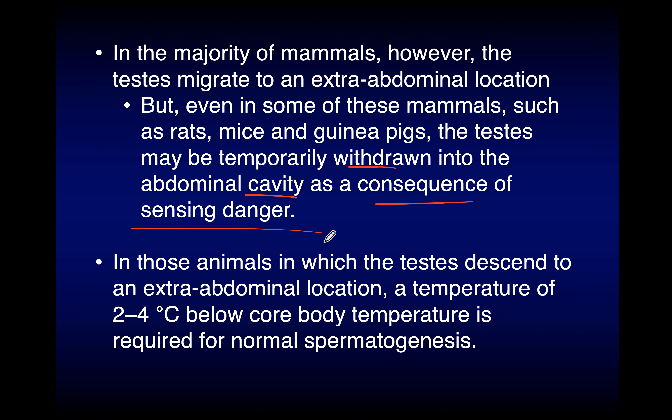In animals where the testes descend to the extra-abdominal location, a temperature two to four degrees below body temperature is required for normal spermatogenesis. There is a cooling system between the testicular artery and testicular vein that reduces the temperature of blood going from the abdomen to the testes by two to four degrees below normal body temperature. If the temperature does not decrease by this amount, there will be no normal spermatogenesis.